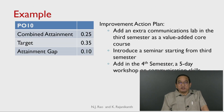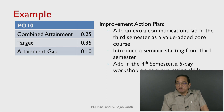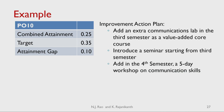One example: PO10 combined attainment is 0.25, the target was set as 0.35, so there is a gap of 0.10. The improvement action plan includes: adding an extra communication lab in the third semester as a value-added core course, introducing a seminar starting from the third semester, and adding a five-day workshop on communication skills in the fourth semester. The improvement plans are spread over third and fourth semesters, meaning they cannot be implemented for the immediately next batch — only for the batch after that. If any improvement involves additional infrastructure, the department must prepare a cost estimate and submit it to management. Make improvement plans as specific as possible; avoid vague phrases like 'motivate the students better.'